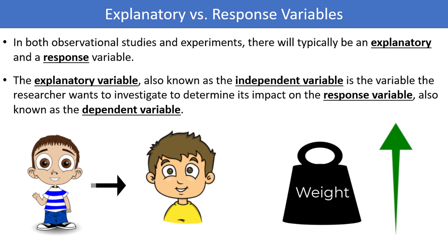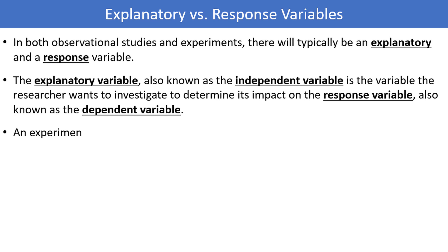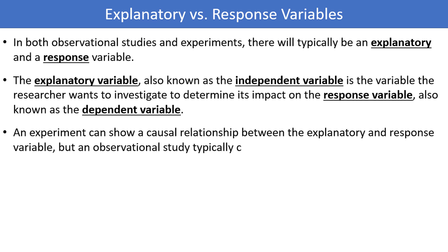The relationship is obvious here. As a child gets older, they will tend to gain weight, but in other circumstances it might be less clear. An experiment can show a causal relationship between the explanatory and response variables, but an observational study typically cannot.